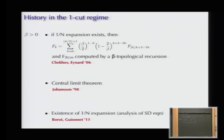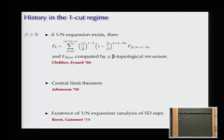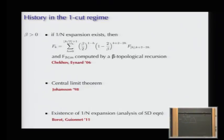For general beta, if you assume a 1/n expansion exists, the coefficients were computed by Chekhov and Eynard—this is called the beta topological recursion. Johansson proved the central limit theorem for all positive beta under approximately the same assumptions. With Guionnet, we proved the full asymptotic expansion in the one-cut case two years ago, systematizing the approach of Albeverio, Pastur, and Shcherbina.